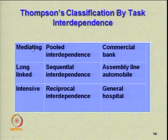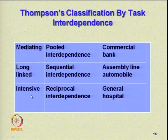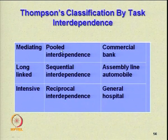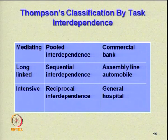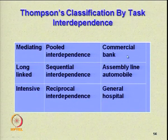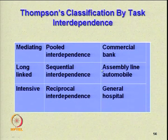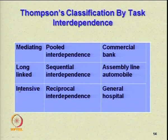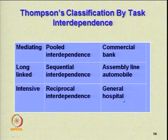Thompson has talked of the same kind of mediating, long-linked, and intensive interface in tasks to create different types of structures. Mediating type of interdependence by task would lead to pooled interdependence — example would be commercial banks. Long-linked sequential interdependence: example would be an assembly line automobile. Intensive interdependence, or reciprocal interdependence — example: a general hospital.